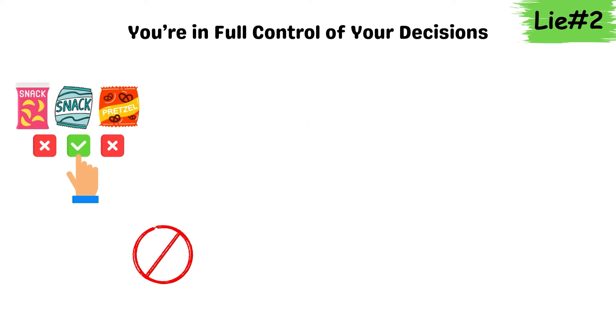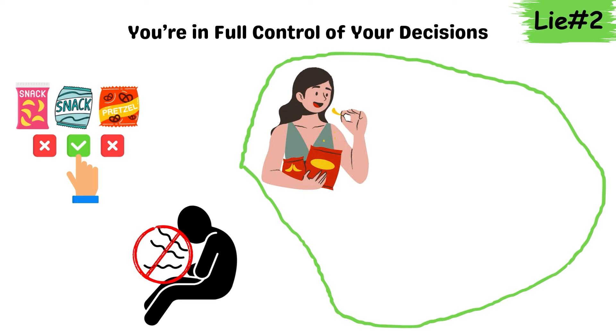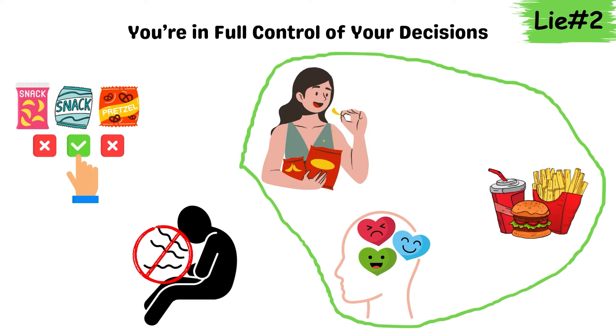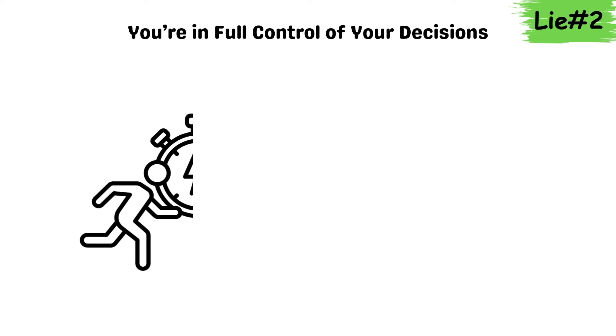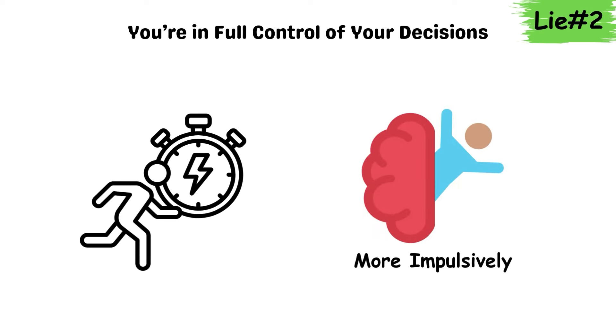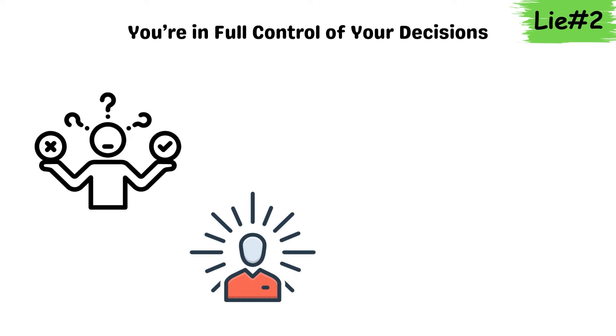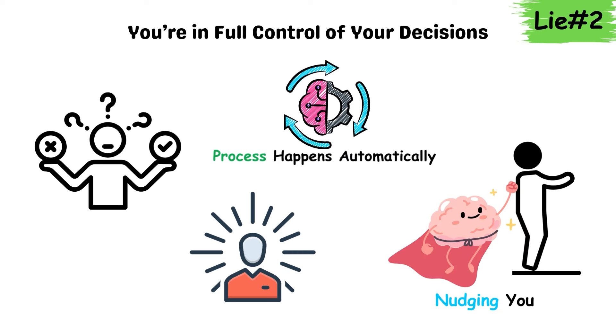For example, choosing a snack isn't just about hunger. It's also about past experiences, emotions, and even visual cues like packaging. Studies reveal that decisions can be swayed by something as simple as the color red, which can make us act faster and more impulsively. While it feels like you're consciously deciding, a huge part of the process happens automatically, with your brain nudging you in specific directions without you even realizing.